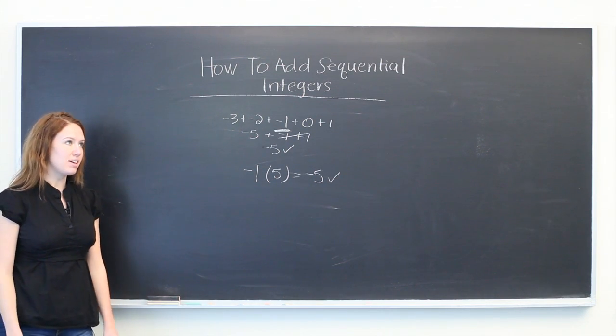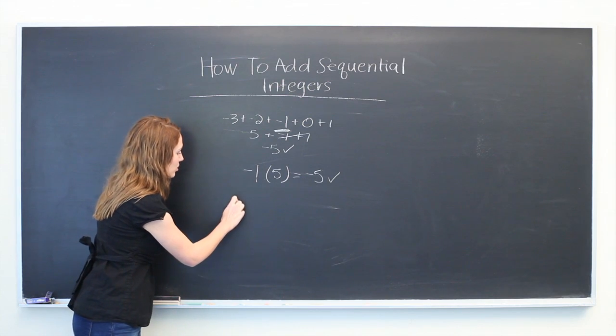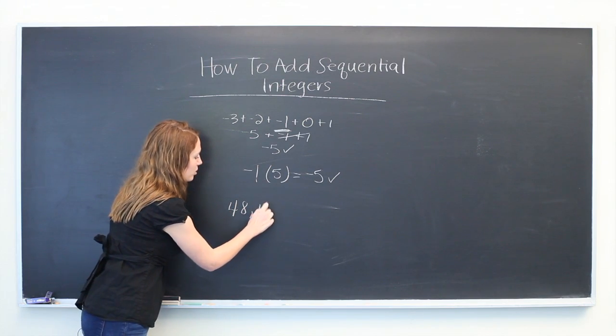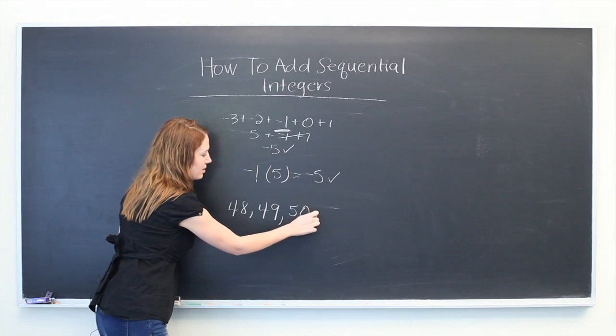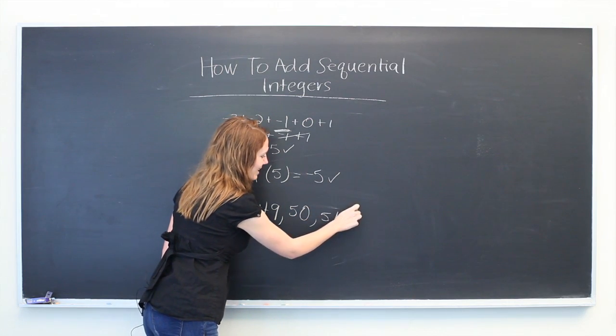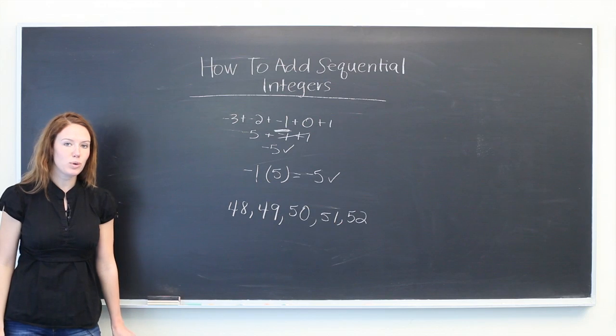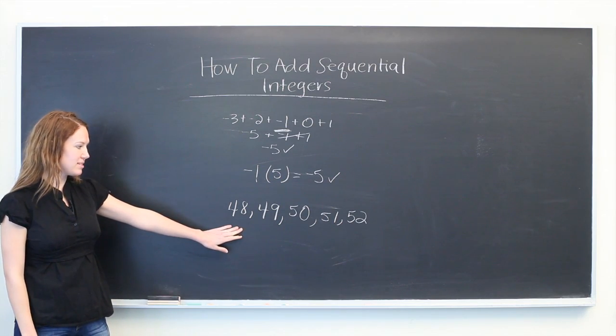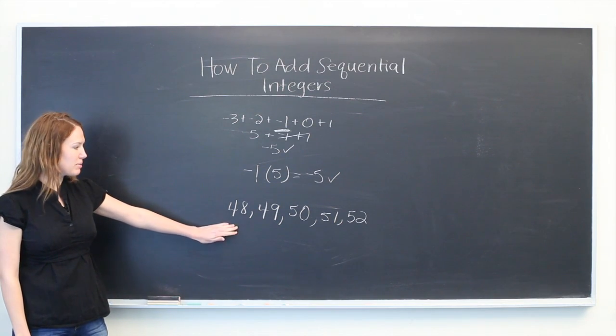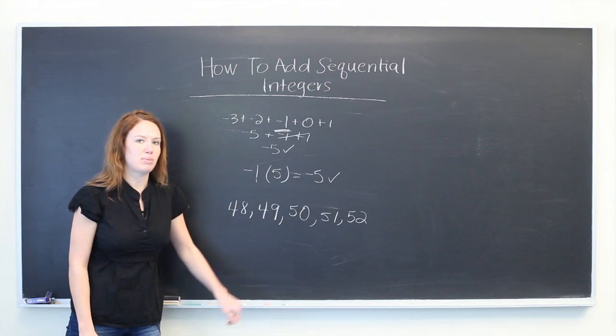So say that you're given 48, 49, 50, 51, and 52, and you only have a few minutes to solve this. You could be in a bit of a time crunch since the numbers are a bit more complicated.